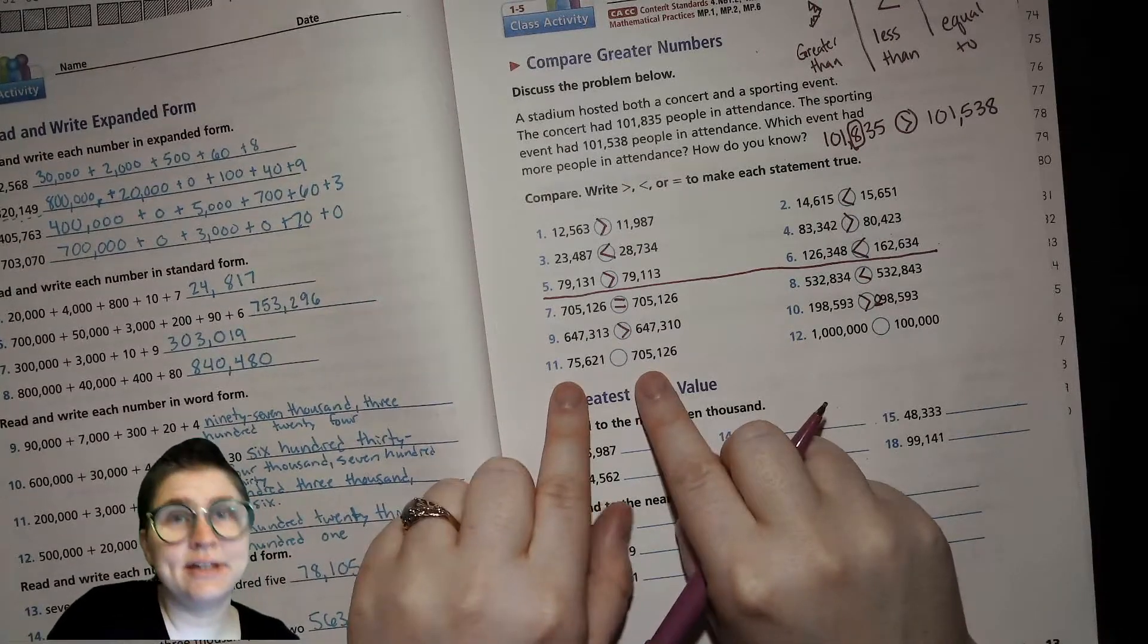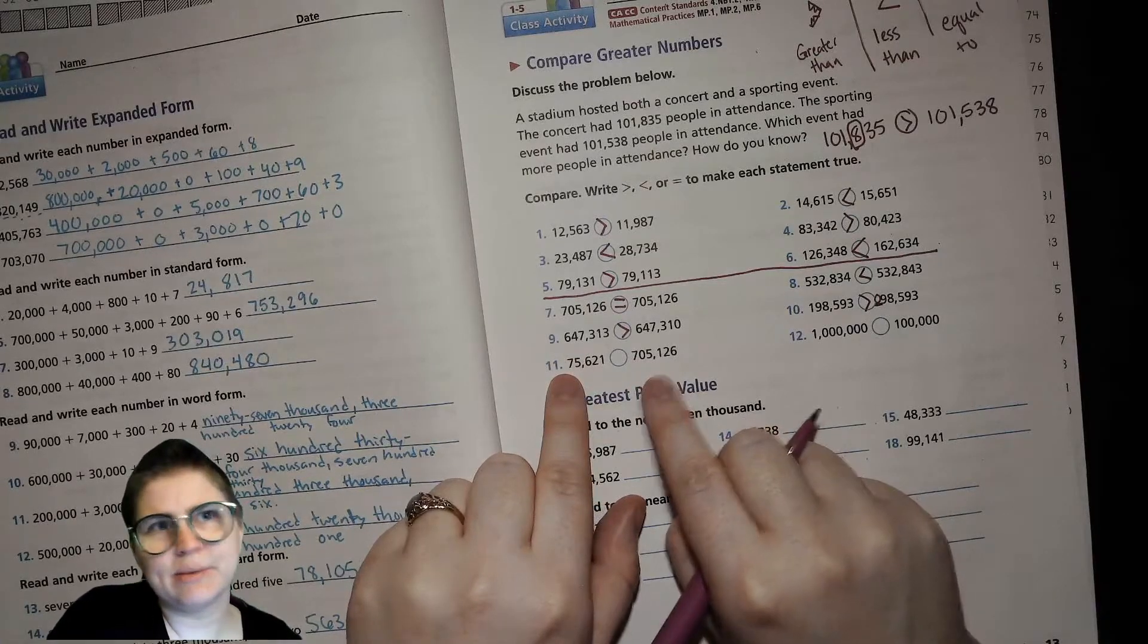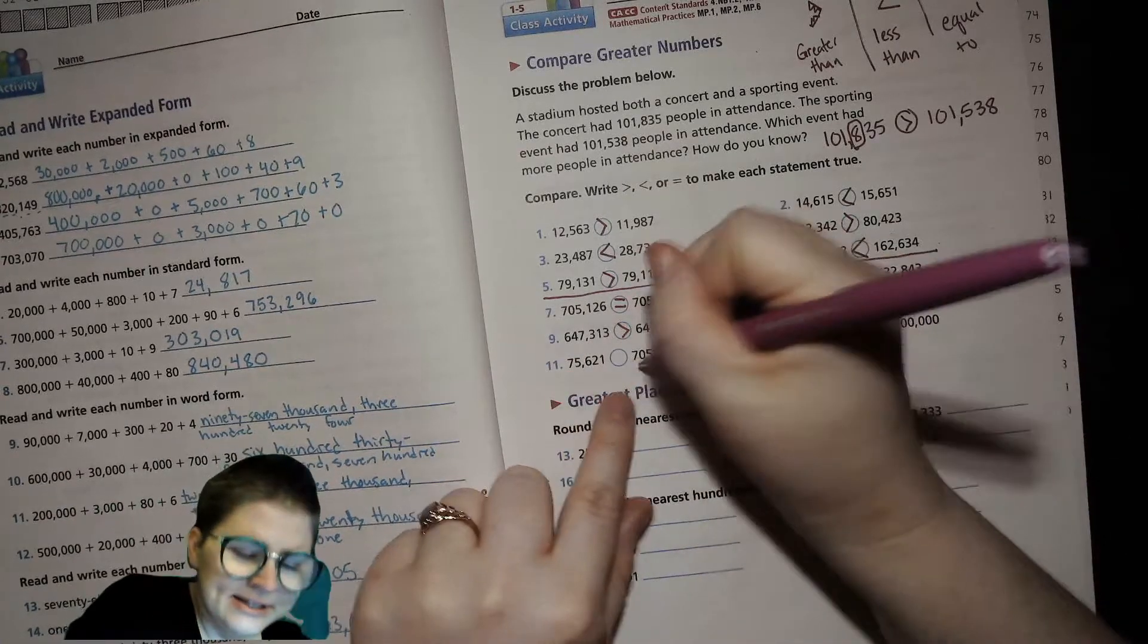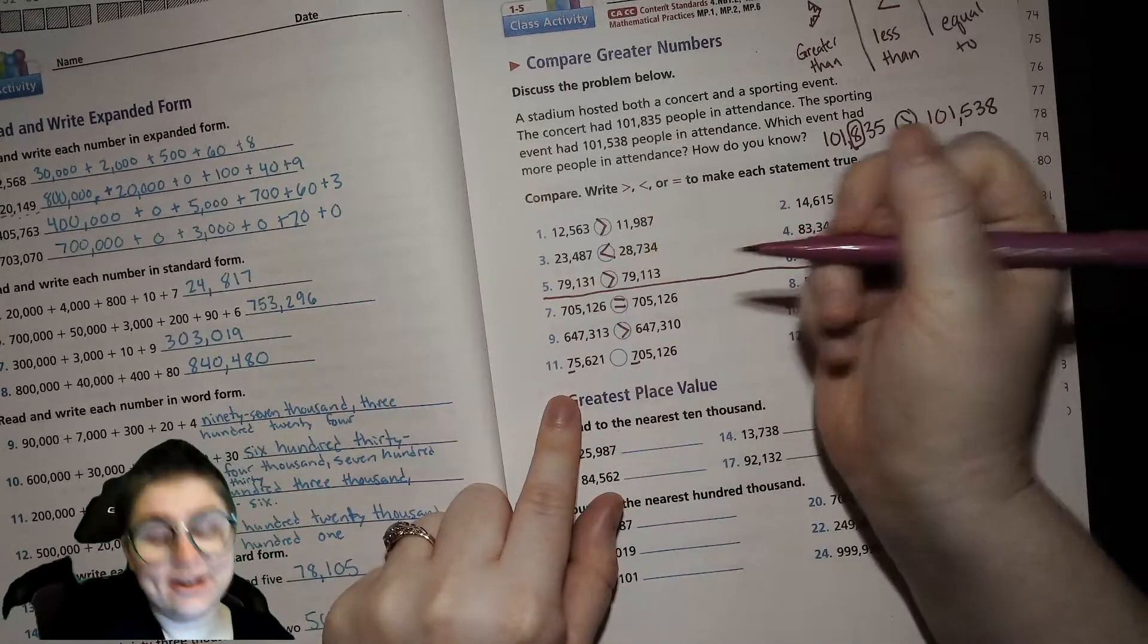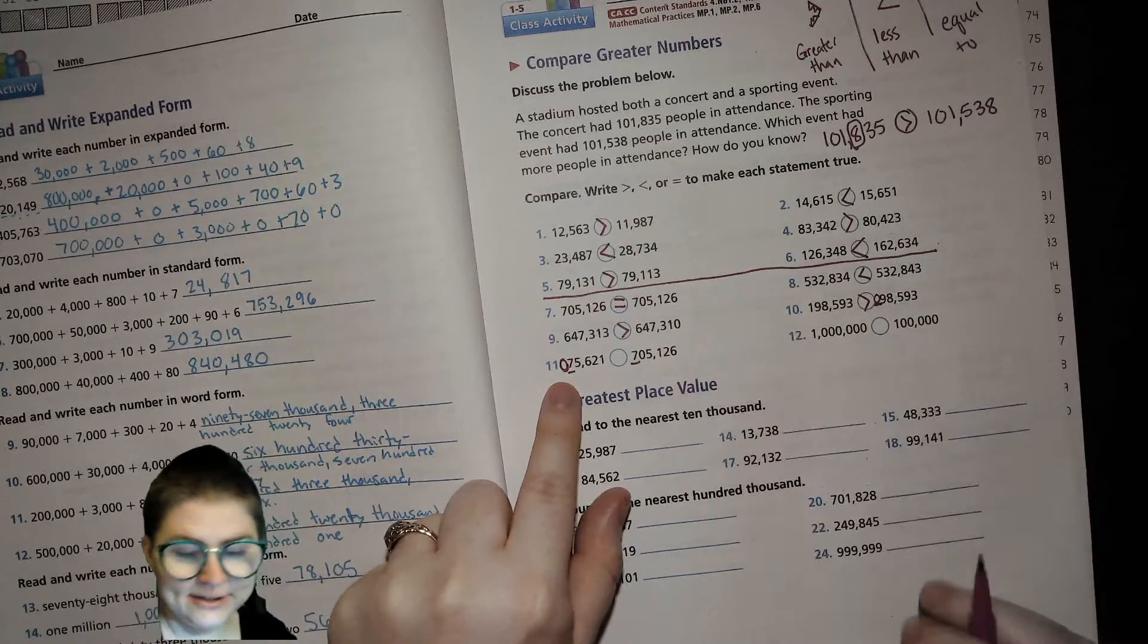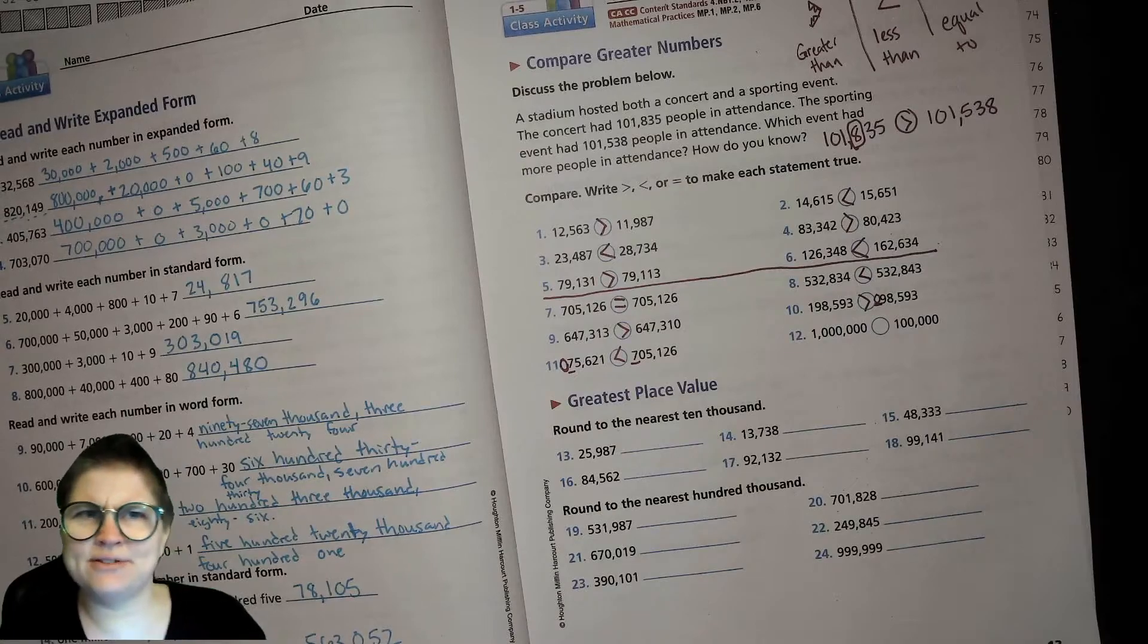Same thing right here. They want you to be like, oh, it's 7 and 5 and the 0 just forget about it. No, no, no. No, this is saying 700,000. This is saying 7 ten thousands. So, we have 0 hundred thousands here. So, then what's greater? The one that actually has some hundred thousands, right?